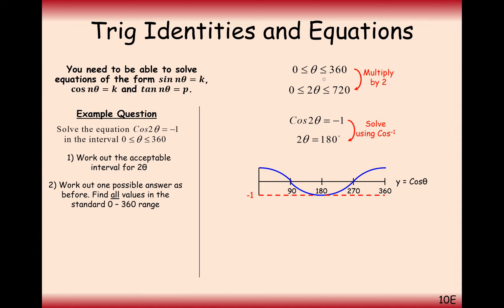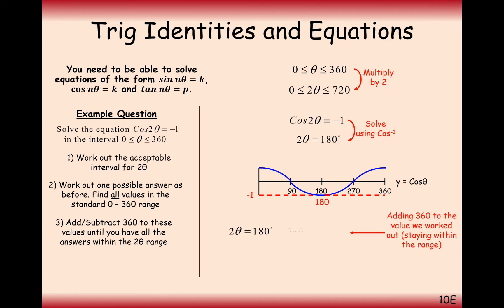But remember, our graph needs to go up to 720. So we're going to need to keep this going on and find the next solution along as well. We're also going to get one that's 360 degrees on from here, which is 540. If we were to go 360 degrees further onwards from there, we'd have a value bigger than 720, which we don't want. 900 we can exclude because that's outside of our domain.